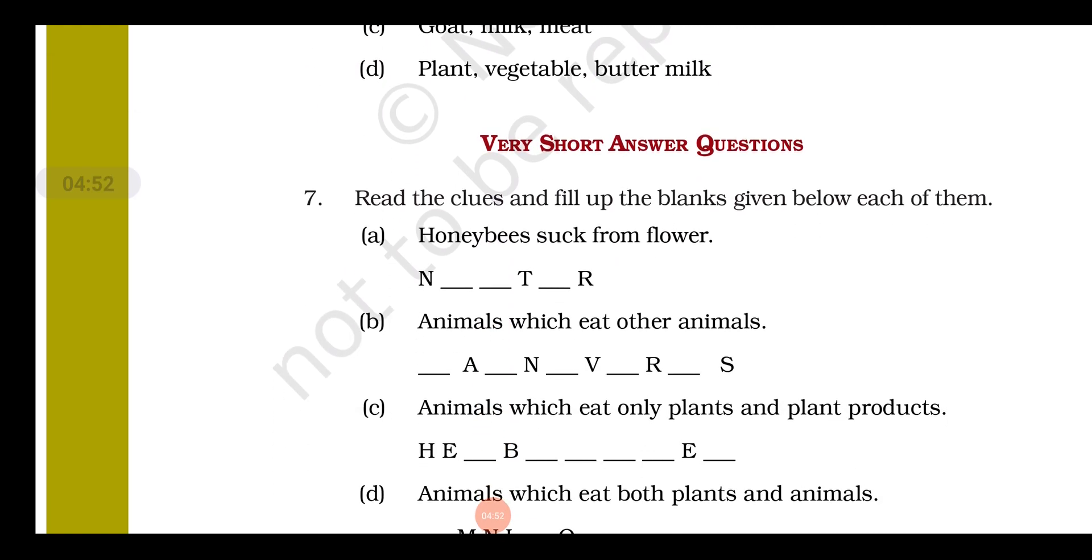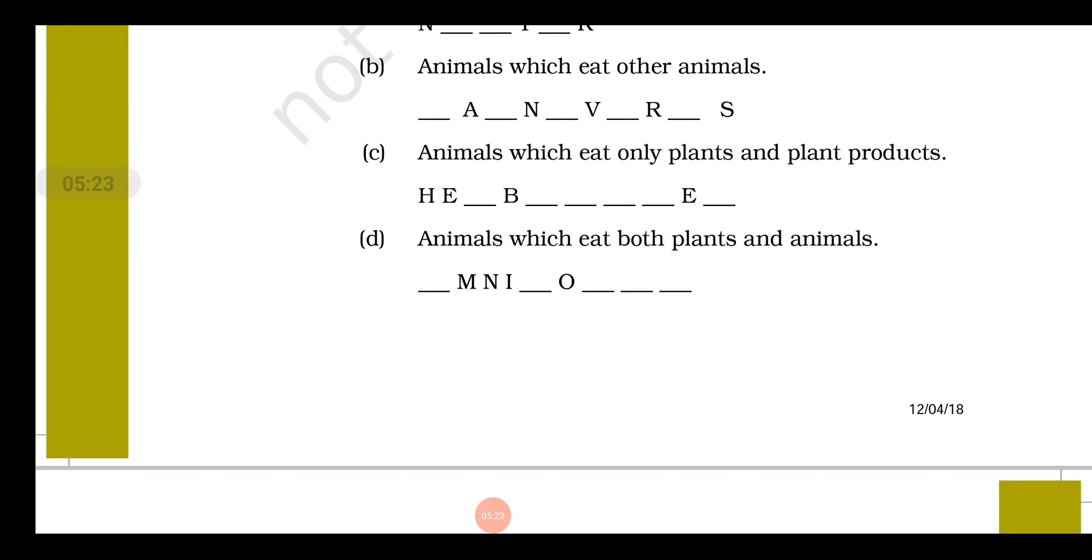Question number seven: read the clue and fill the blank given below each of them. Honey bee sucks from flower: N-E-C-T-O-R, nectar. Animals which eat other animals, they are called carnivorous. Animals which eat only plants and plant products, they are called herbivores. Animals which eat both plants and animals are called O-M-N-I-V-O-R-E-S, omnivores.